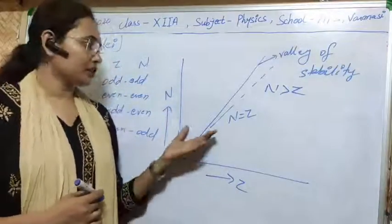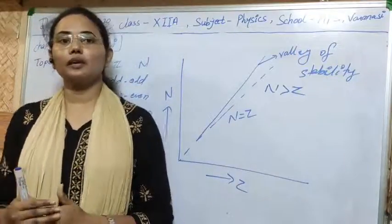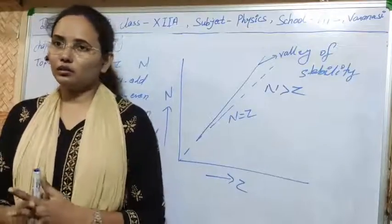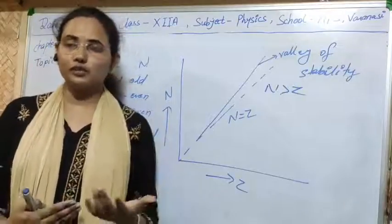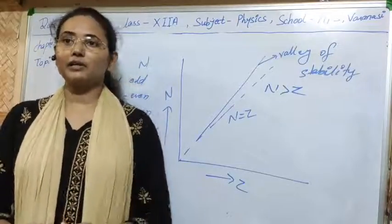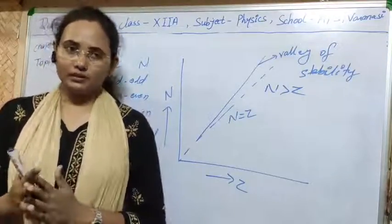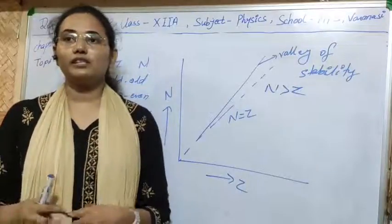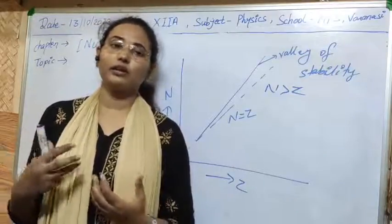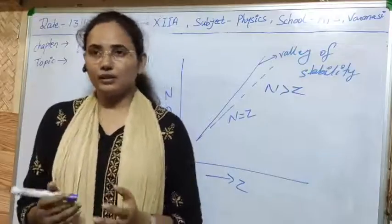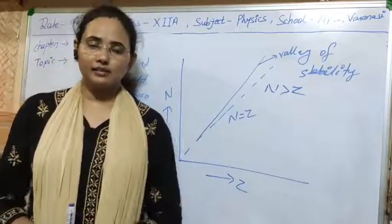I think all the concepts regarding nuclei are now clear to you. According to your syllabus I have covered all the topics like nuclear fission, fusion, nuclear forces, and exchange forces, and how we can define stability and other properties of the nucleus. This chapter ends here today. In the next class we will start a new field of physics — electronics. So prepare this chapter as well. Let's end the class here. Thank you.